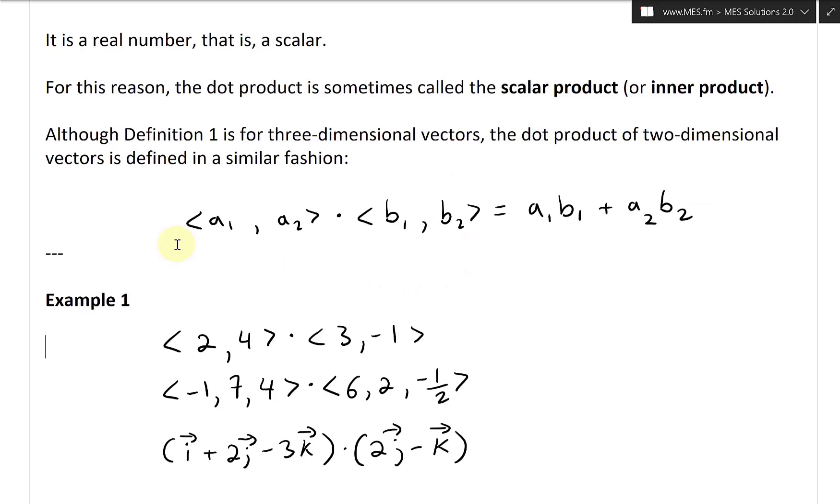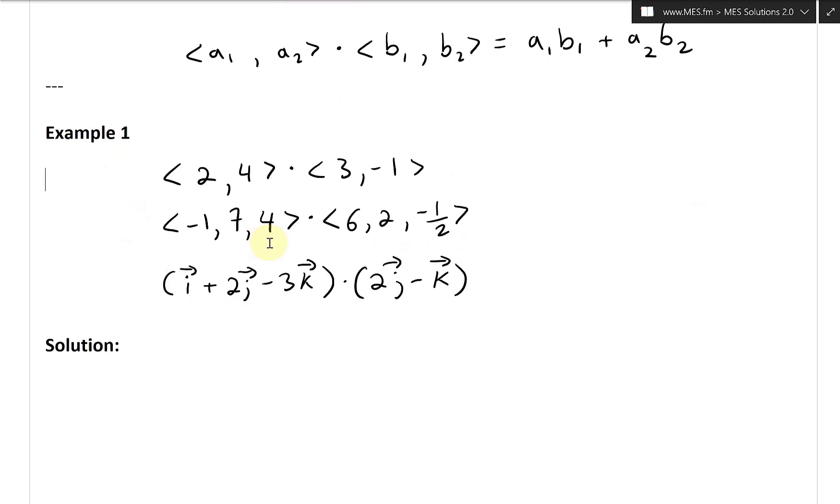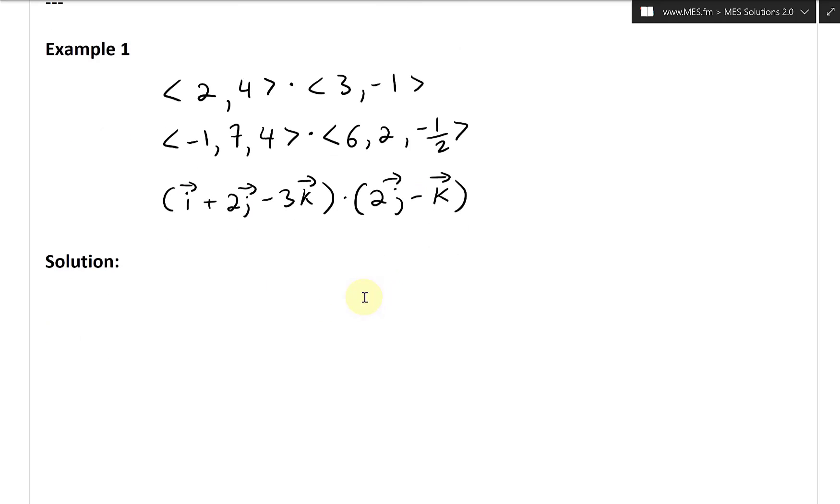All right, so now let's take a look at an example. This is example one, and this just has three different dot products for us to exercise. So we have this vector, the two-dimensional vector 2, 4, dot product 3 and then negative 1. Let's look at the solution.